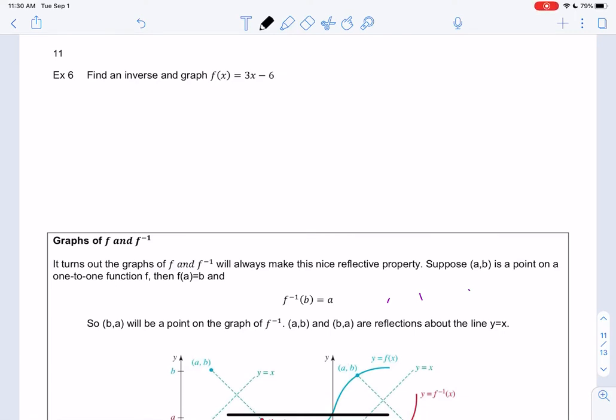Alright, let's look at a couple more inverses and finish up section 2.8. I'm going to find the inverse and graph f(x) = 3x - 6, so I'm going to get the graph ready and graph 3x - 6. It's linear, so use those properties, slope and y-intercept.